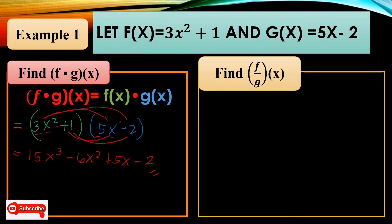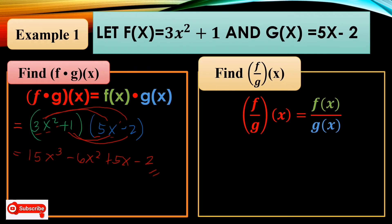Now find f/g(x) = f(x) divided by g(x). The function f(x) is 3x² + 1 over g(x) which is 5x − 2. As you can see, we cannot cancel out, divide, or factor out both f(x) and g(x). That's why (3x² + 1)/(5x − 2) is the final answer.